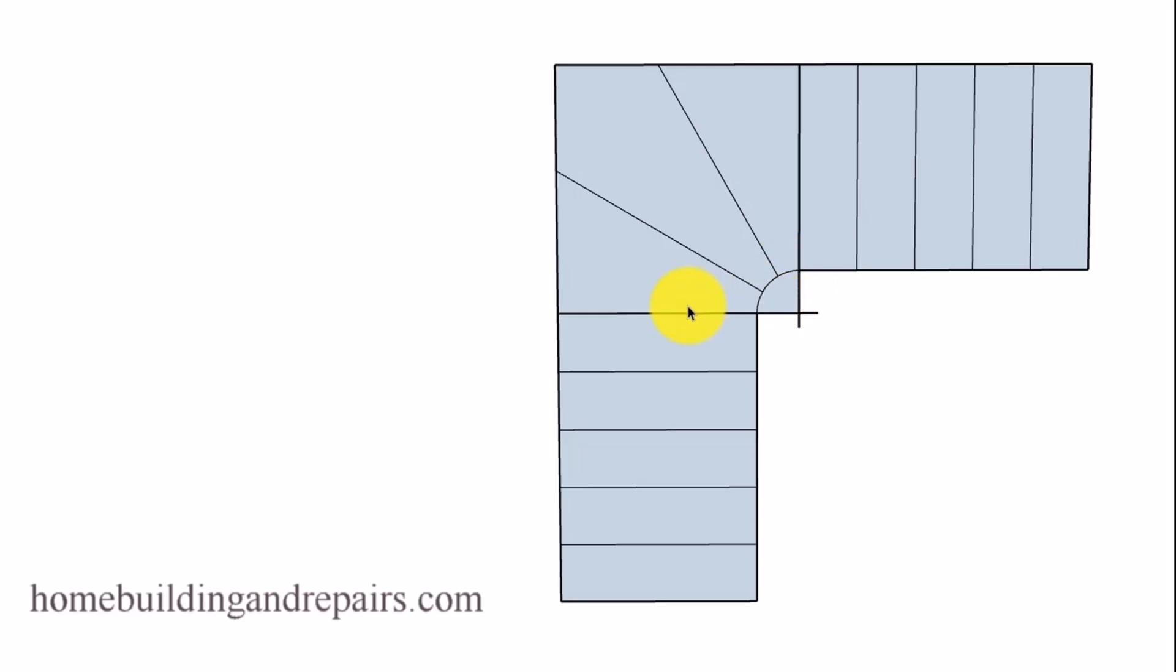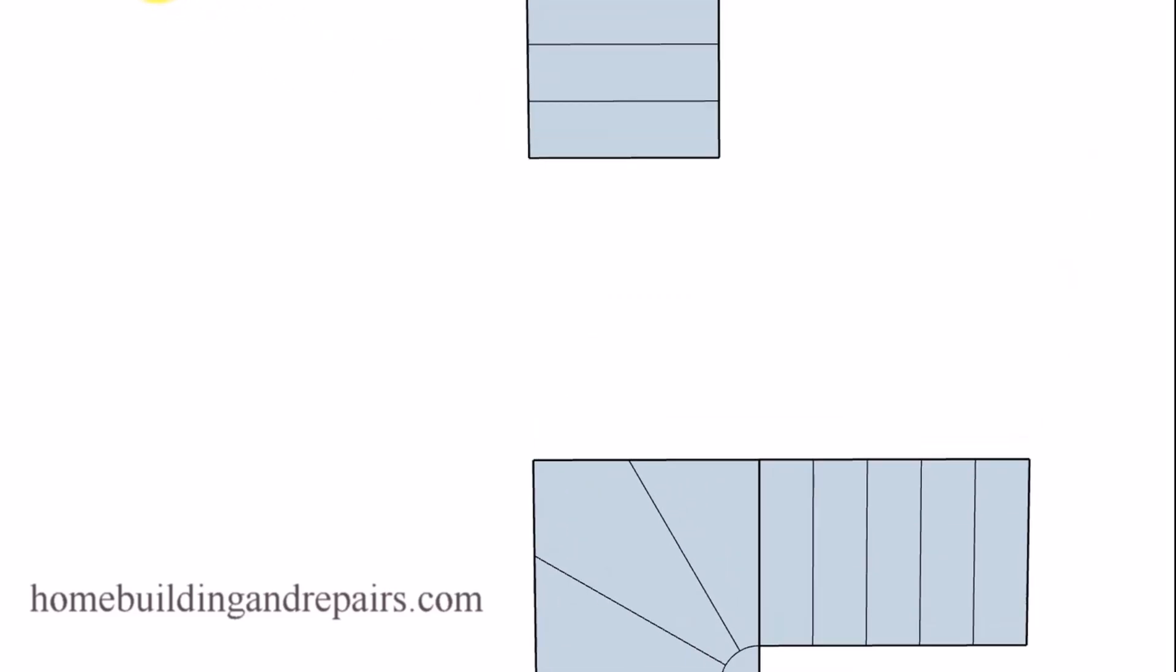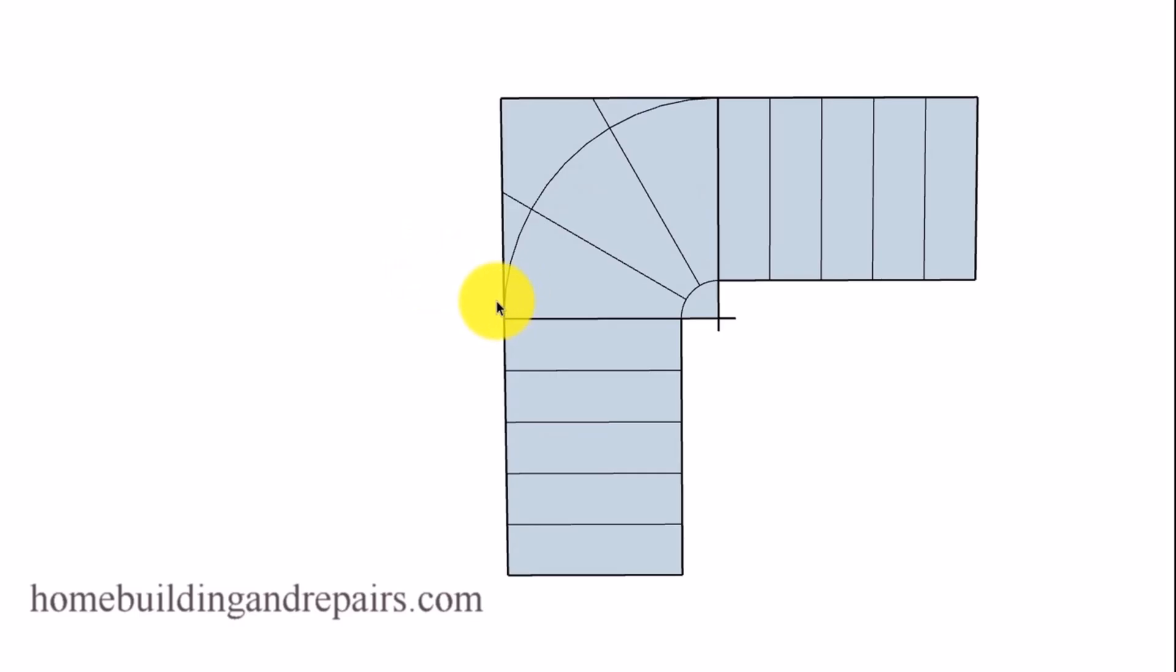So you could always, if you wanted to do something like this, you could always move this set of stairs this way, and this one this way a little bit. And then make the winders a little larger, and then you wouldn't have a problem with that. And you'll see a little bit more of that later on in the video.